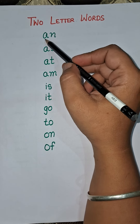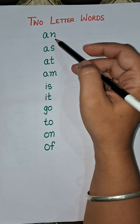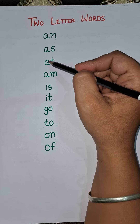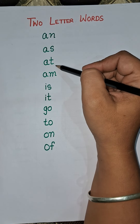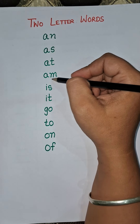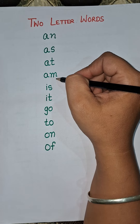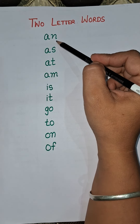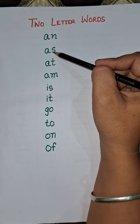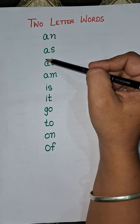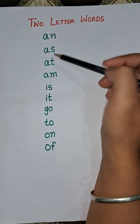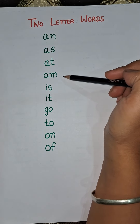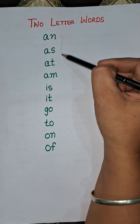A-N AN, A-S AS, A-T AT, A-M AM. Again we will read: A-N AN, A-S AS, A-T AT, A-M AM. These are the A letter words.